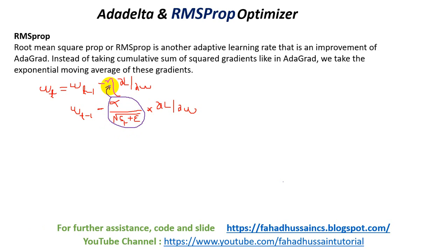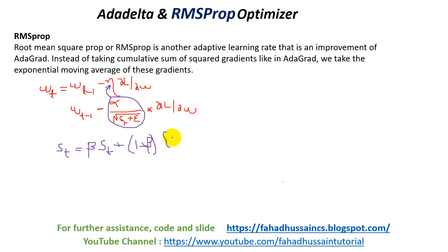So what is ST? That is BETA. I have told this in gradient descent with momentum — BETA is a hyperparameter which gives us the facility to take an exponential average, which is normally 0.9 or 0.95. ST is defined as: BETA times ST-1, plus 1-BETA times the loss function with respect to the weight, squared. That is the same adaptive form, but multiplied by its previous value.